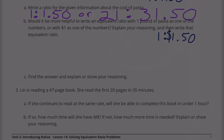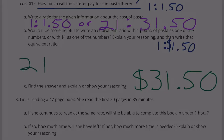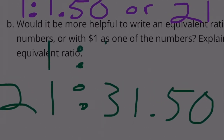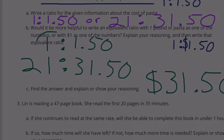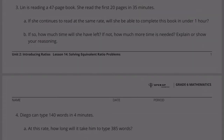Part C: find the answer and explain your reasoning. We already found the answer: $31.50. It's because he's buying 21 pounds for $31.50, which is the same rate as one pound for $1.50. So if one pound costs $1.50, then 21 pounds would cost $31.50.